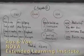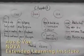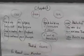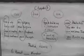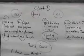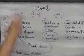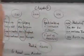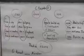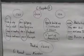Chapter 7. Let's see what the difference is in the usage between aus and von, because both mean from.